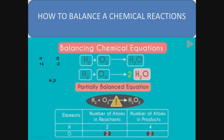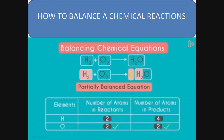Some students wonder why we write H2O and not H2O2. The reason is that hydrogen has a valency of +1 and oxygen has a valency of -2. When we make a formula, the valencies of atoms are exchanged with each other — hydrogen gets the valency of oxygen and oxygen gets the valency of hydrogen — so the formula becomes H2O, not H2O2.